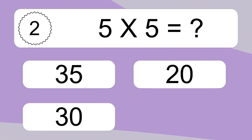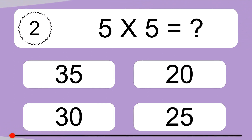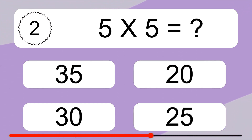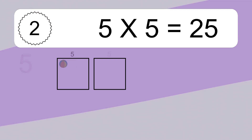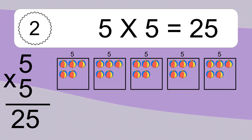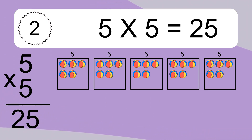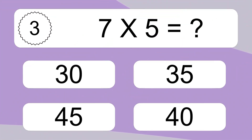Five times five equals what? Five times five equals twenty-five. We have five boxes, and each box has five colorful balls inside. If you count all the balls in all the boxes together, you will have five times five balls. This equals twenty-five balls.